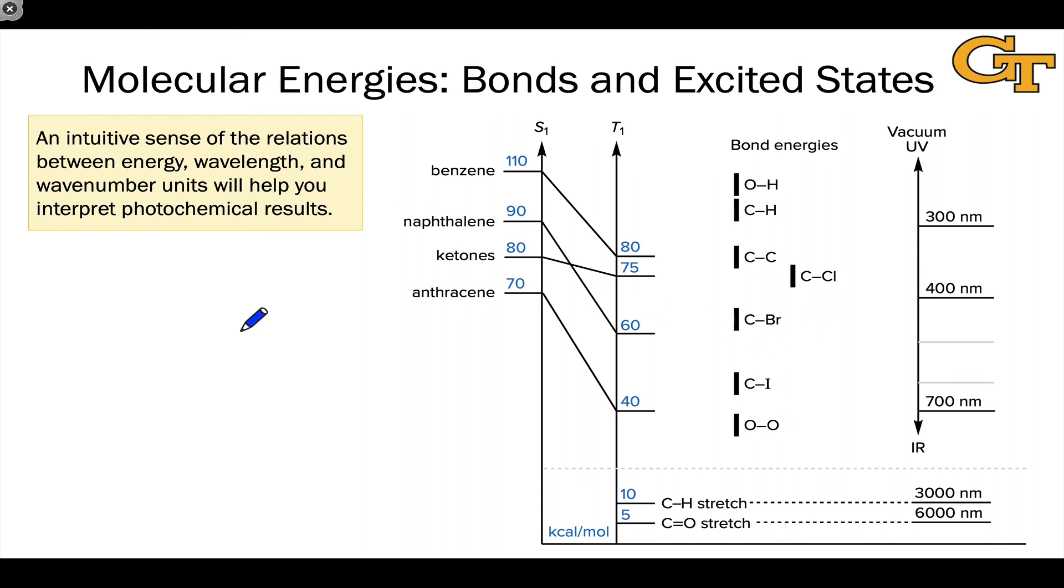If we look at the energies of excited states, we can also make similar connections. Where does the singlet energy, the energy of the S1 state of a ketone generally fall in relation to the electromagnetic spectrum? Well, based on this graphic, about 350 nanometers is going to be enough to excite a ketone from its ground state to its S1 state. For anthracene, about 410 nanometers is going to be enough to photo excite anthracene from its S0 to its S1 state.